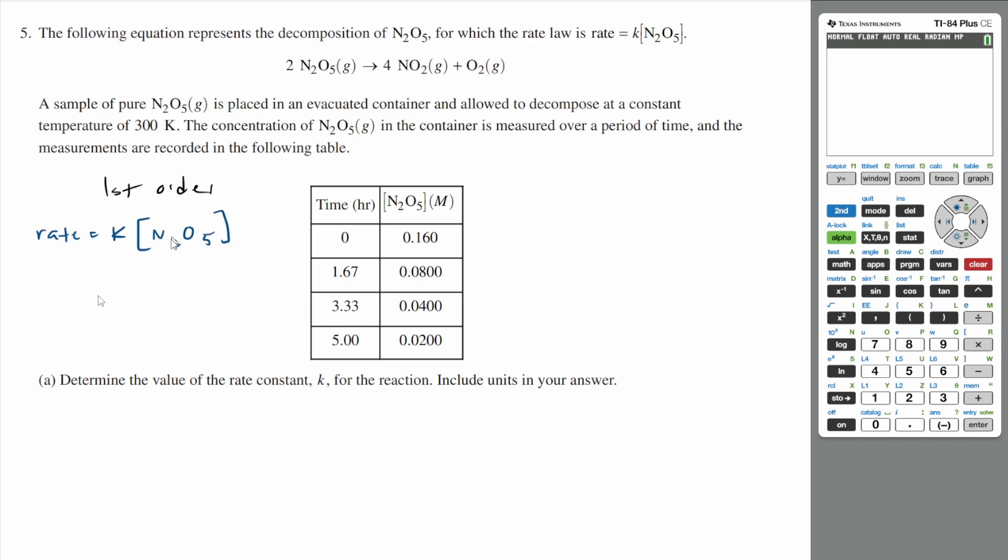If you remember your integrated rate law for first order kinetics, it's going to be the natural log of the concentration at some time t is negative kt plus the natural log of your initial concentration. So you could plug in values from this table here and isolate k and figure out solve for k. But there is an easier way to do this.